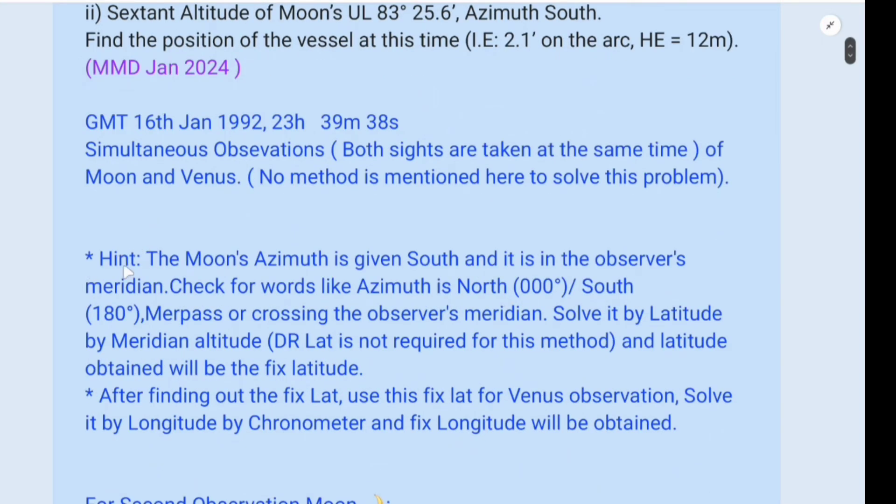So I have given here some hints how to solve and how to identify the problem. The Moon's azimuth is given south and it is on the observer's meridian. So whenever you see questions like this, check for words like azimuth is north bearing 000 degrees north, or south bearing 180 degrees, merpass or crossing the observer's meridian.